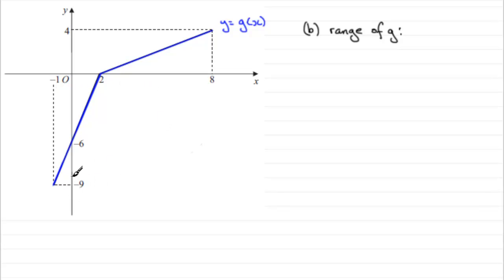And those y values are these values that go from minus 9 all the way up through here to 4. So the range would be written something like this.